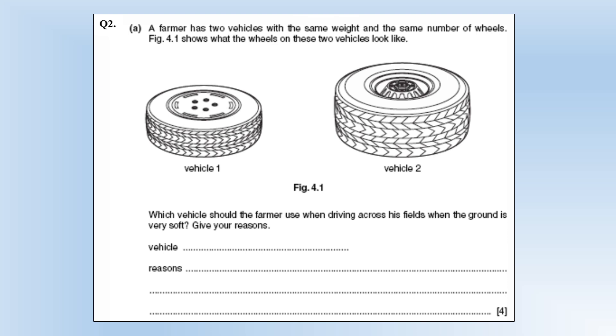So for the vehicle we should use vehicle two and the reason is it's got a large area but the same weight force so if you have the same force over a larger area that gives you a lower pressure and so a reduced chance of sinking in.